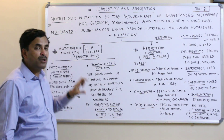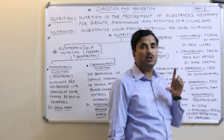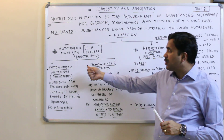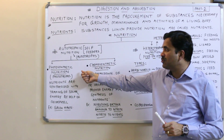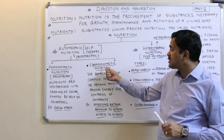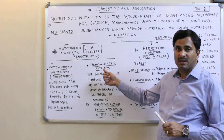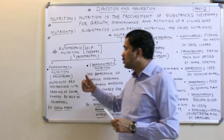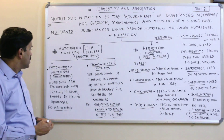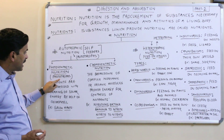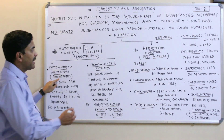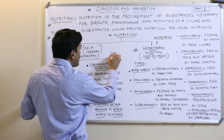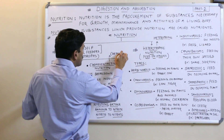Autotrophic nutrition is again of two types: one is photosynthetic nutrition and another is chemosynthetic nutrition. Organisms in which photosynthetic nutrition is found are called phototrophs, and those in which chemosynthetic nutrition is found are called chemotrophs.